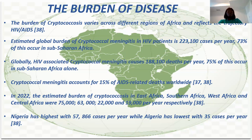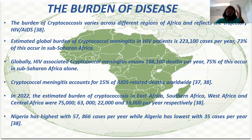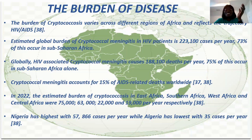In 2022, cases were estimated across East Africa, Southern Africa, West Africa, and Central Africa. Nigeria has the highest case burden of this disease, while Australia has the lowest, with very few certified cases per year.